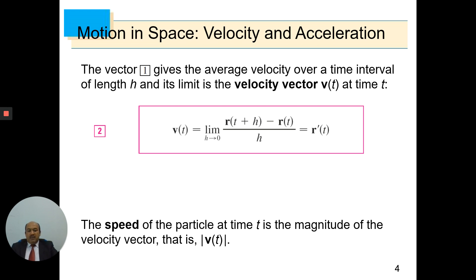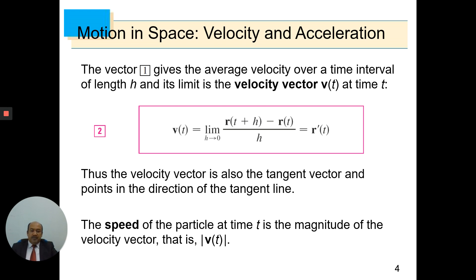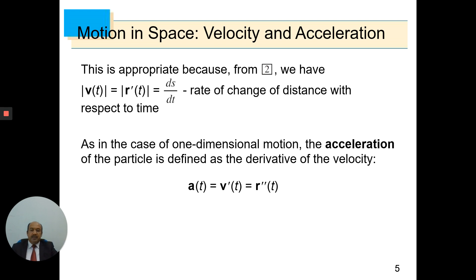The speed of the particle at time t is the magnitude of the velocity vector, that is |v(t)|. The velocity vector is also the tangent vector and points in the direction of the tangent line. This is appropriate because |v(t)| equals ds/dt, the rate of change of distance with respect to time, where ds/dt is the derivative of arc length s with respect to t.